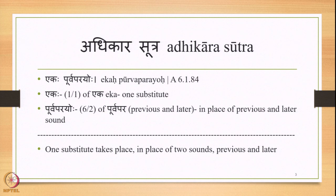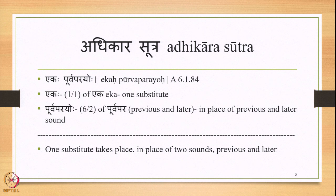This classification is facilitated by the Adhikara Sutra Ekapurvaparayoho. We already studied this sutra — it is 6.1.84. It has two words: Ekaha, meaning one substitute, and Purvaparayoho, the 6th case dual of Purvapara — previous and latter. So Purvaparayoho means in place of previous and latter sounds. Ekapurvaparayoho means one substitute takes place in place of two sounds, namely previous and latter.